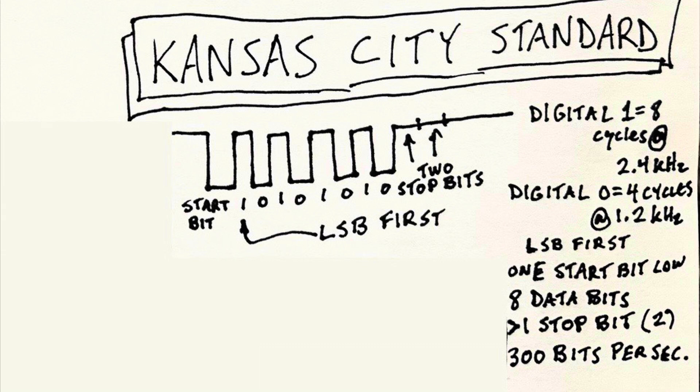Digital zeros were recorded as four cycles of a 1.2 kilohertz signal. The data would be presented in UART format, with the line being high and then going low for a start bit, followed by eight bits of data in least-significant-bit-first format. Afterward, the stop bit meant the line would go high again, with two stop bits at the end of every data cycle.